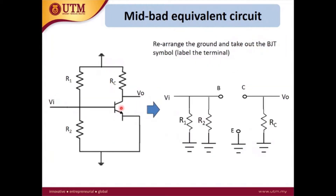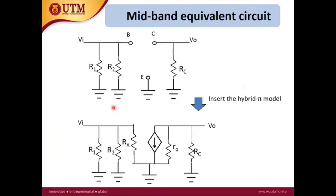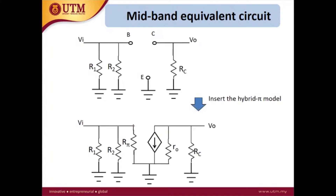Next, you need to replace the BJT with the hybrid pi model. Between base and emitter there is Rpi, and between emitter and collector we have a dependent current source with R0 in parallel, forming the mid-band equivalent circuit.